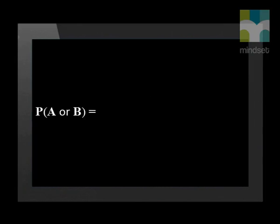The formula to get the probability of event A or event B is: the probability of A plus the probability of B, minus the probability of A and B, which is the intersection of the two events. This is called the addition rule for probability.